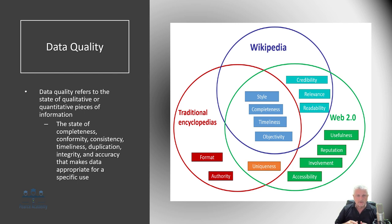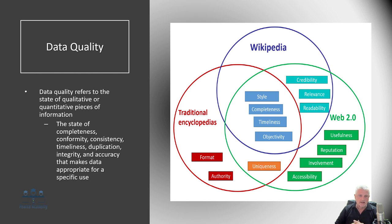Looking at the definition of data quality in this diagram, we can see what Wikipedia defines — we have traditional encyclopedias and also the web version — and all the attributes of each one and how they interrelate to each other.